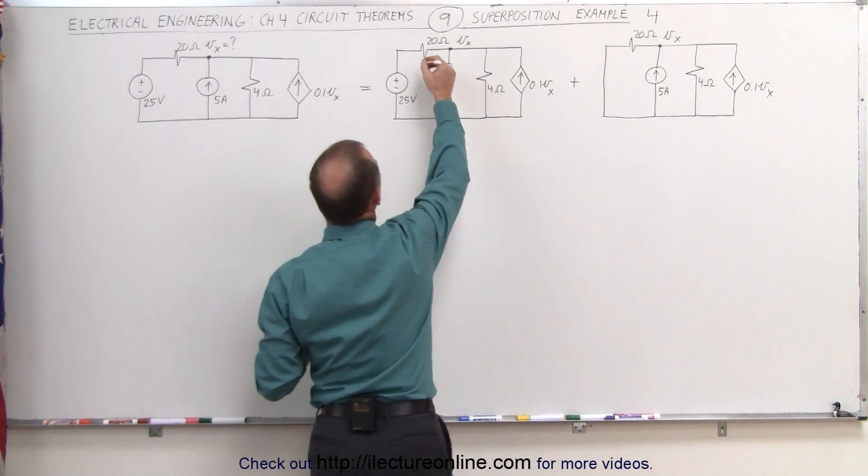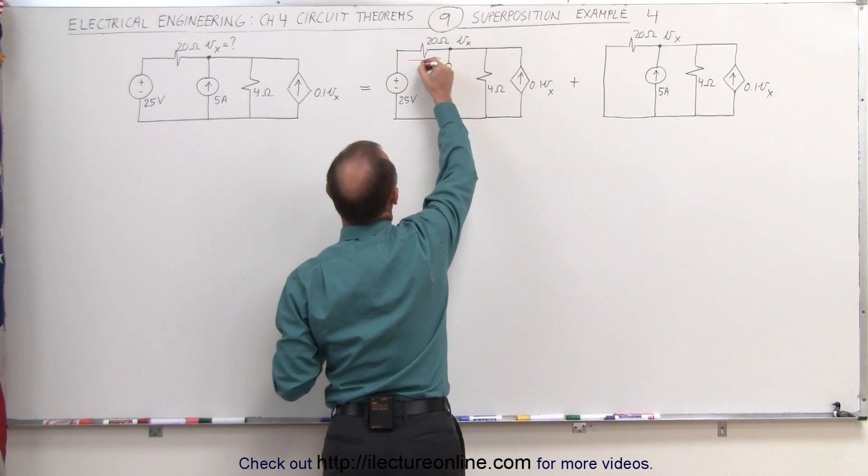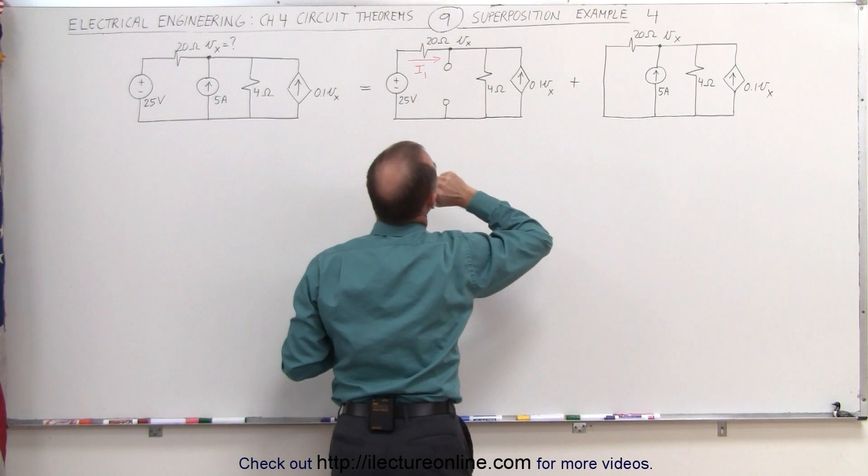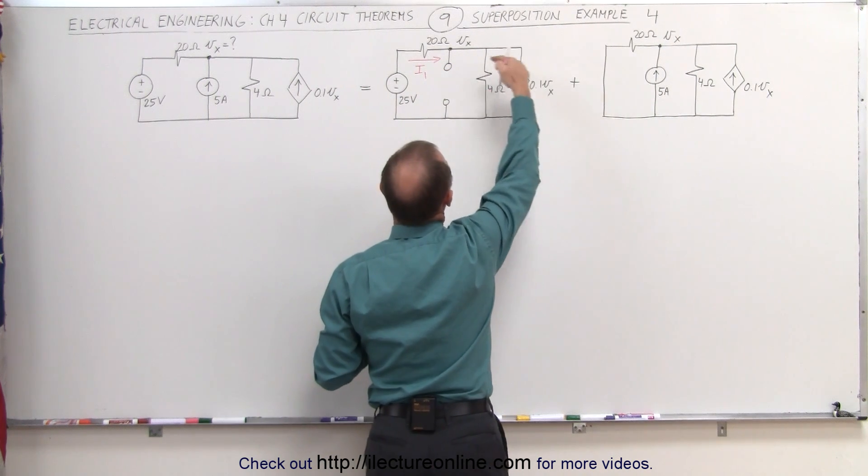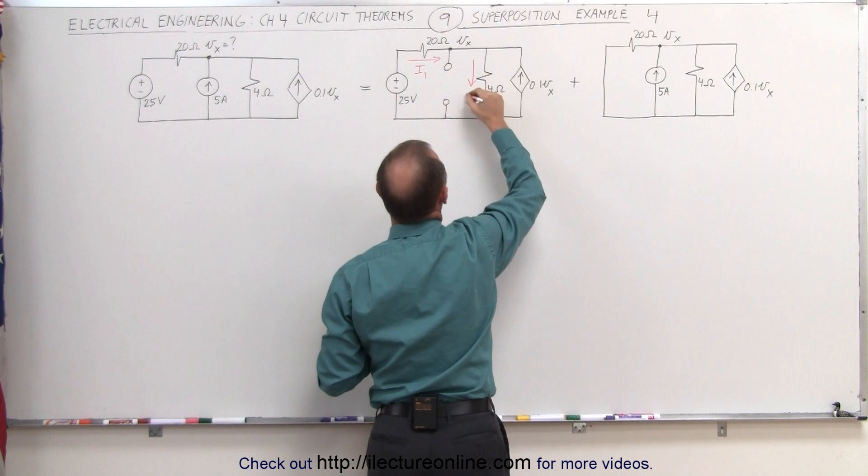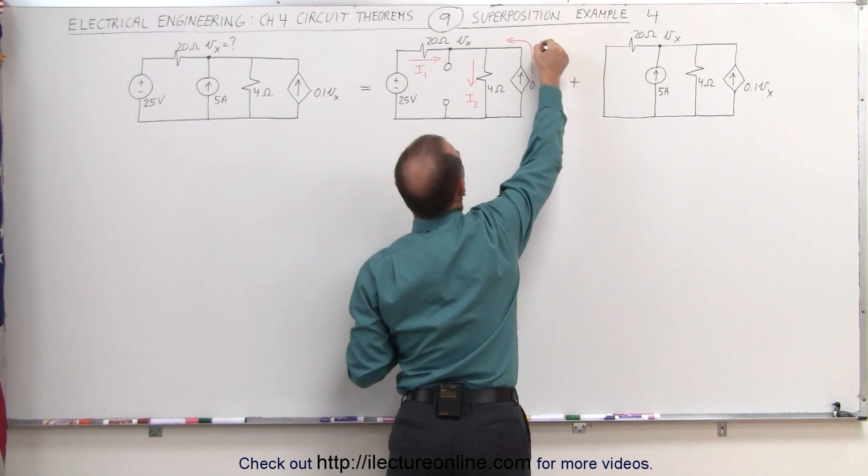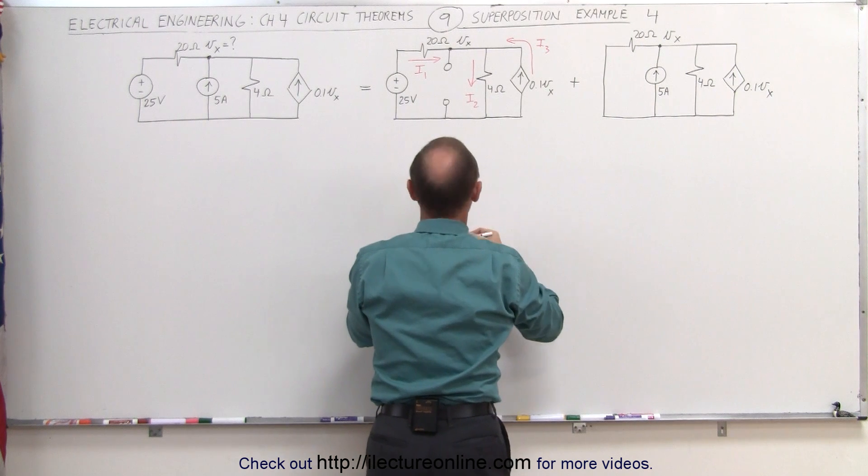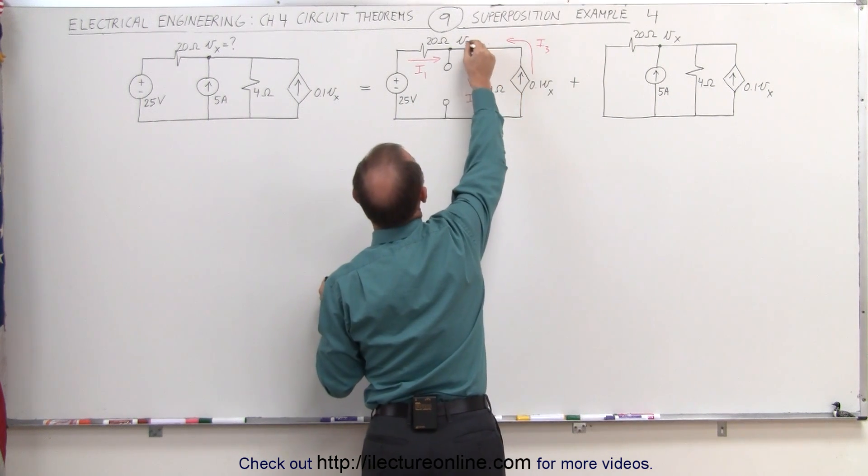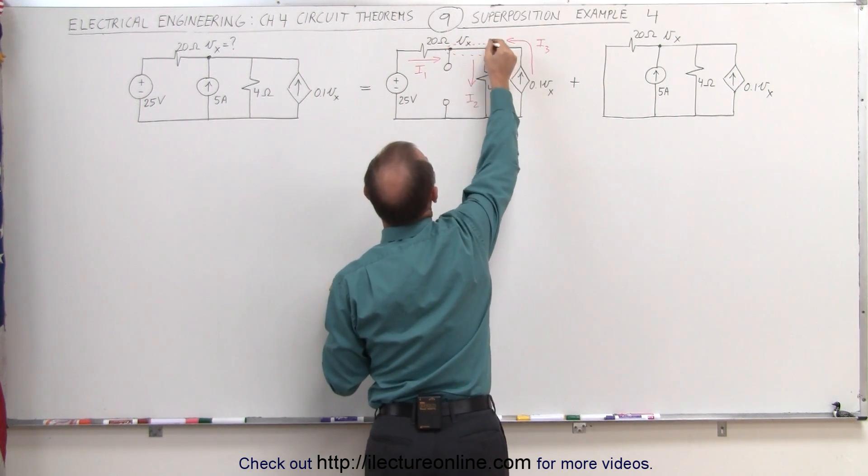Realizing that we're going to have a current moving in this direction, let's call that I1. We'll have a current probably in this direction, let's call that I2, and a current in this direction, let's call that I3. Notice that this is one single node, so we're trying to find V sub X here.